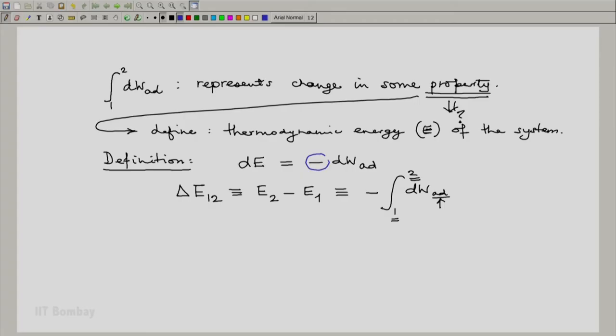Now one thing we will notice is that we have used a negative sign. This negative sign is a matter of convention. We have come across one convention already that was the convention for work interaction. We said that let us consider the work done by the system to be positive.